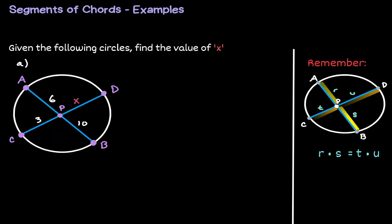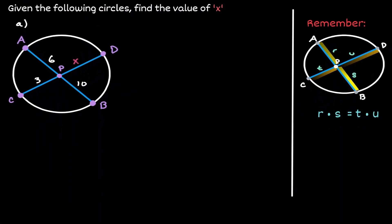Let's look at some examples where we can use properties of segments of a chord. The objective of the following problems is going to be to find the value of the variable x. The property that we're going to keep in mind is that given a chord, if we multiply the line segments within that chord, it's going to be equal to the multiplication of the line segments of the other chord.